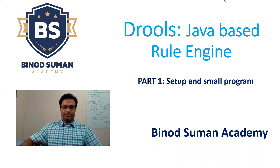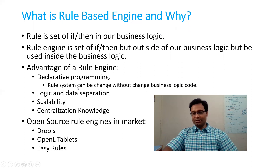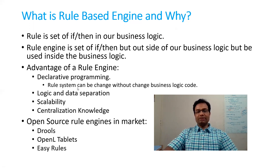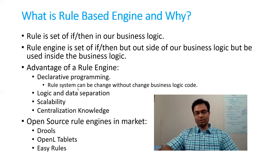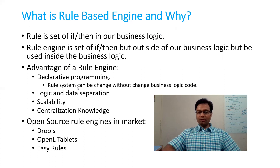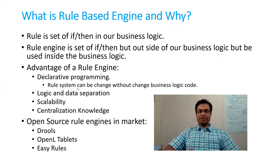Let me go to the next slide. As I mentioned, a rule is a set of if-then business logic. And if you want to extract these conditions from your code, then you should use the rule engine. The first advantage of the rule engine is declarative programming — the rule system can be changed without changing the business logic code, without changing the code at all. Logic and data should be separate. Another advantage is scalability — if you want to build very complex conditions, do it without touching the code. Your rules should be in one place, that is called centralized knowledge. That is why this rule engine is very useful.